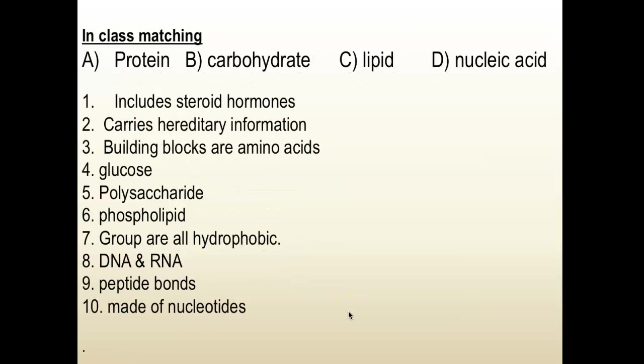Here's the matching exercise answers: number one is lipid (C); number two is nucleic acid (D) — carries hereditary information like DNA; number three is protein (A); number four, glucose belongs to carbohydrate (B); polysaccharide is carbohydrate (B); phospholipid is lipid (C); groups are all hydrophobic is lipid (C); DNA and RNA belong to nucleic acid (D); peptide bonds is protein (A); and number ten, made of nucleotides, is nucleic acid (D).